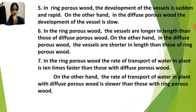Number five: in ring porous wood the development of the vessel is sudden and rapid, but in diffuse porous wood the development of the vessel is slow. Number six: in ring porous wood the vessels are longer in length than those of diffuse porous wood, but in diffuse porous wood the vessels are shorter than in ring porous wood.